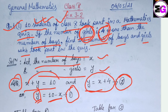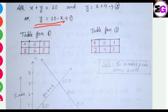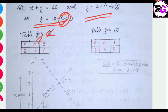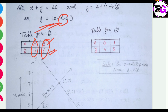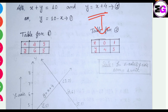According to the equations, we have to find the solution of these two equations graphically. For that we have to make two tables. The first equation is y equals 10 minus x and the second equation is y equals x plus 4. For the first equation's table, if we put x equals 4, then 10 minus 4 is 6, so the first point is (4, 6). If we put x equals 5, then 10 minus 5 is 5, so the next point is (5, 5).